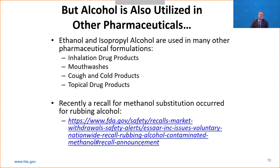We started looking at this and saying: we're seeing methanol substitution in more and more alcohol for hand sanitizers — are there other risk factors? We talked with USP. Ethanol and isopropyl alcohol, the two alcohols susceptible to this, are used in quite a few pharmaceutical formulations: inhalation products, mouthwashes, cough and cold products including some manufactured for children, and topical drug products. All of these products have safety risks for patients if there is methanol contamination. While it was just limited to hand sanitizers, we've now seen it starting to creep out — there's a recent recall for methanol substitution in rubbing alcohol. What started as a small, somewhat localized area is starting to balloon.